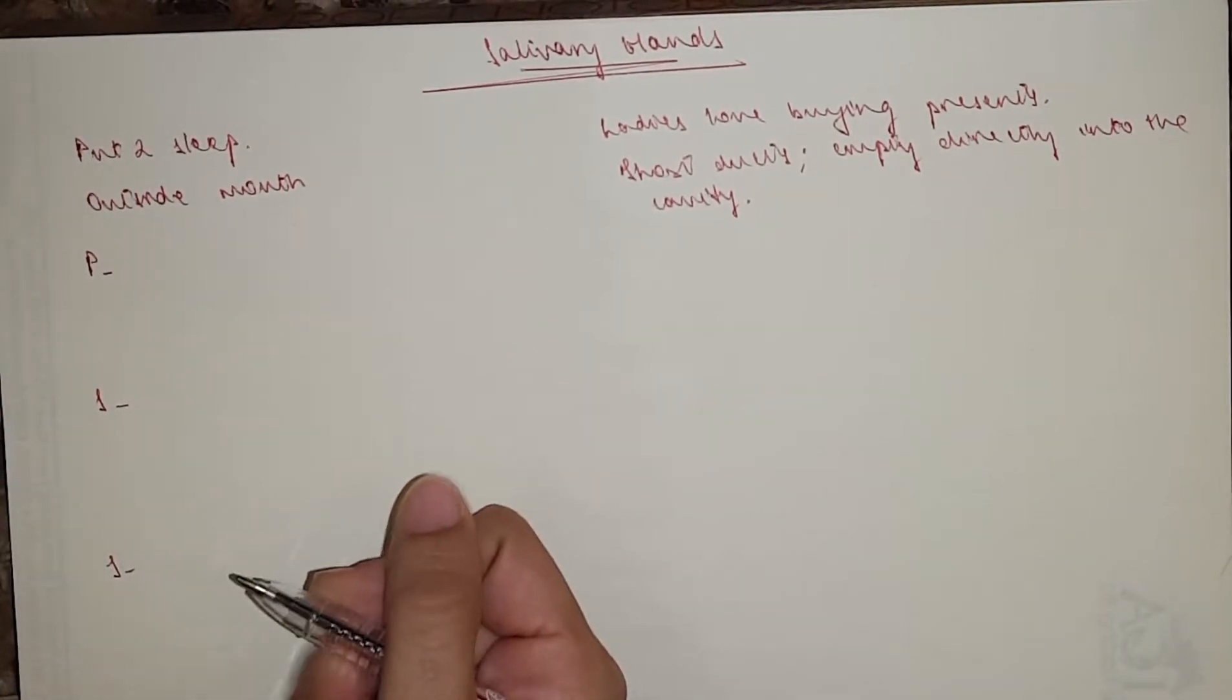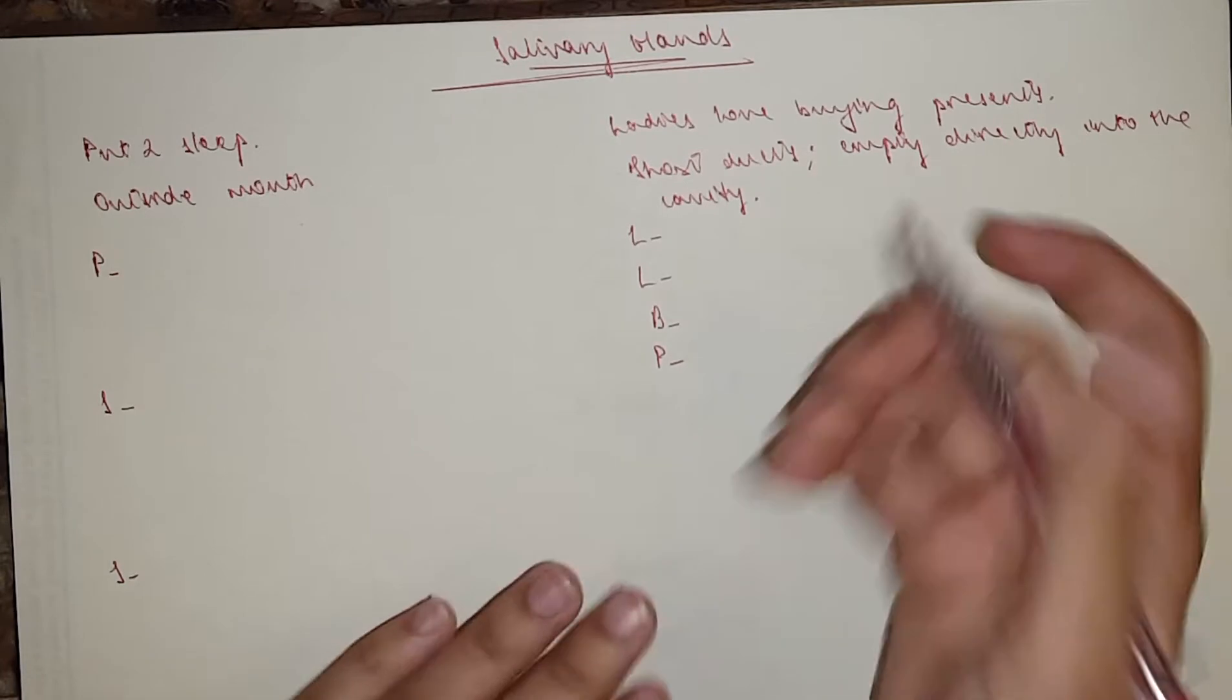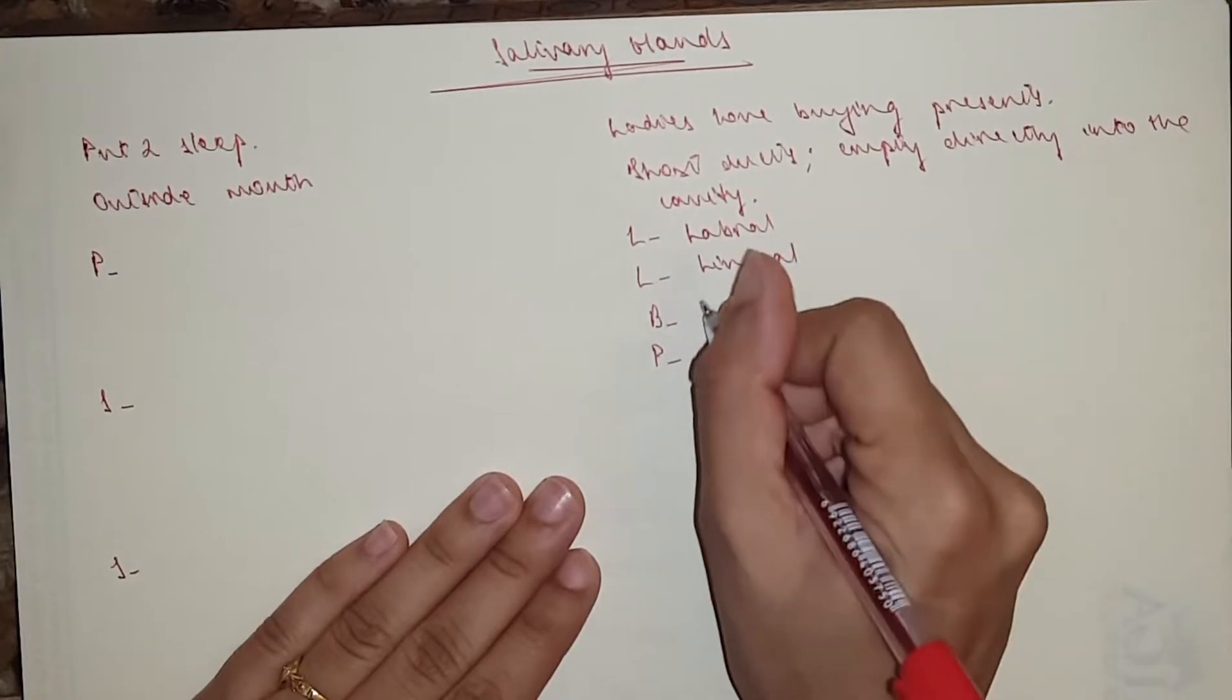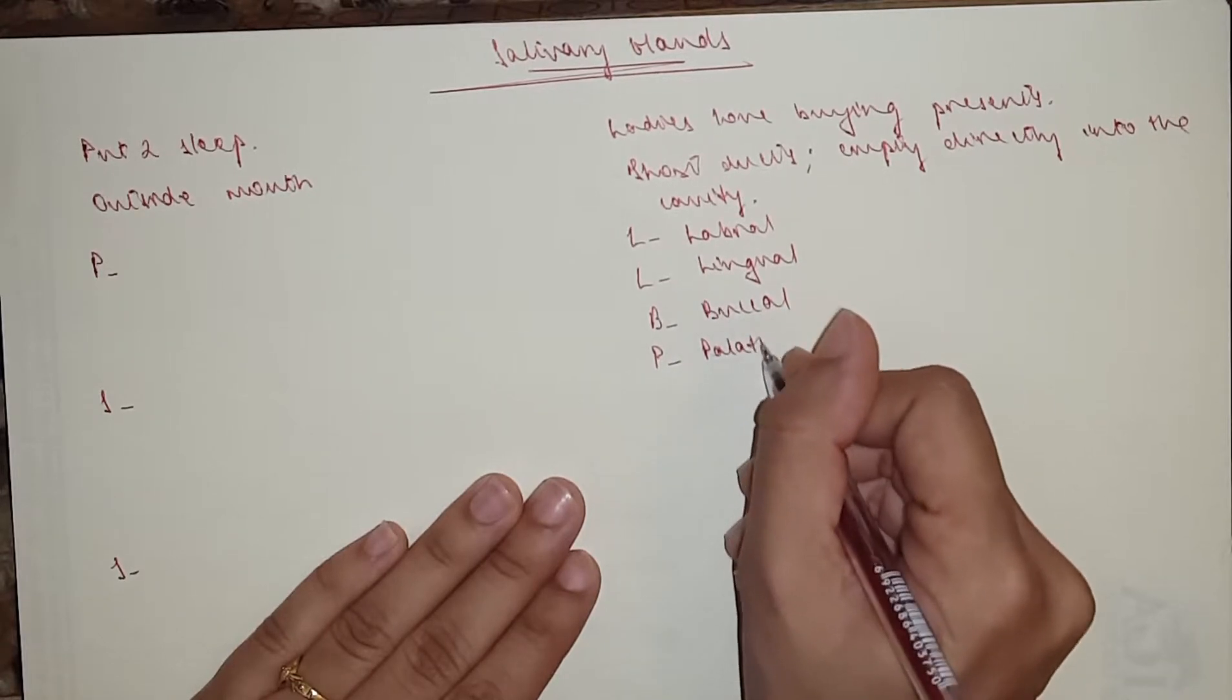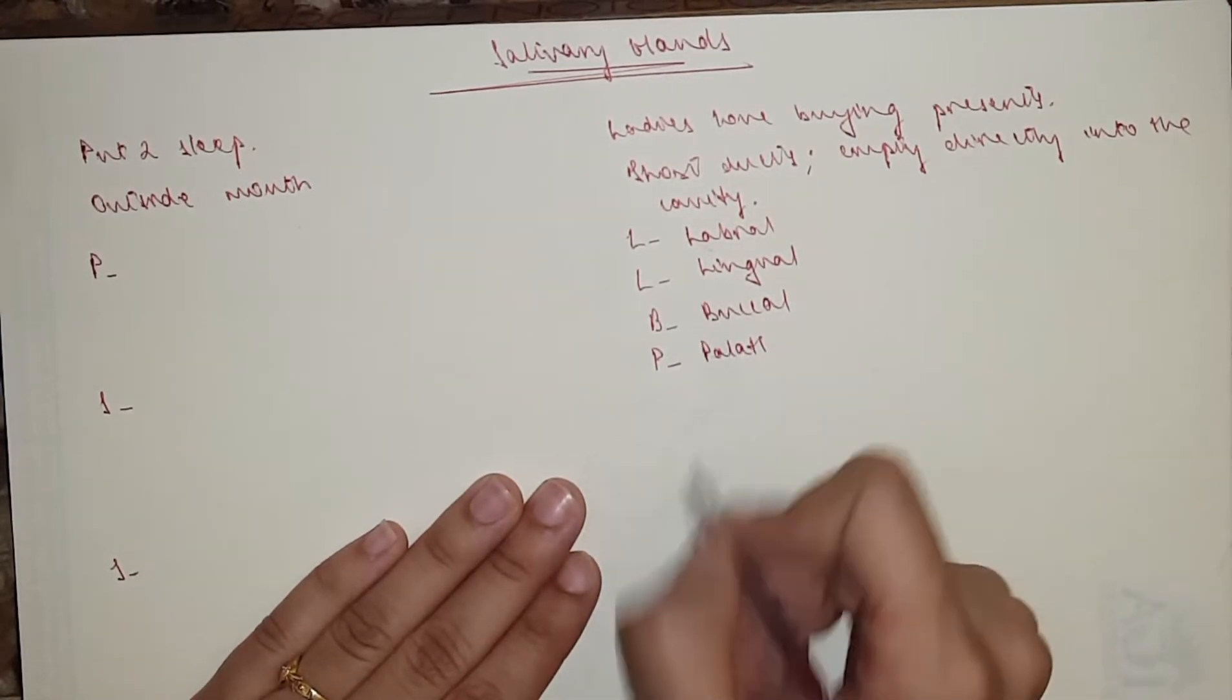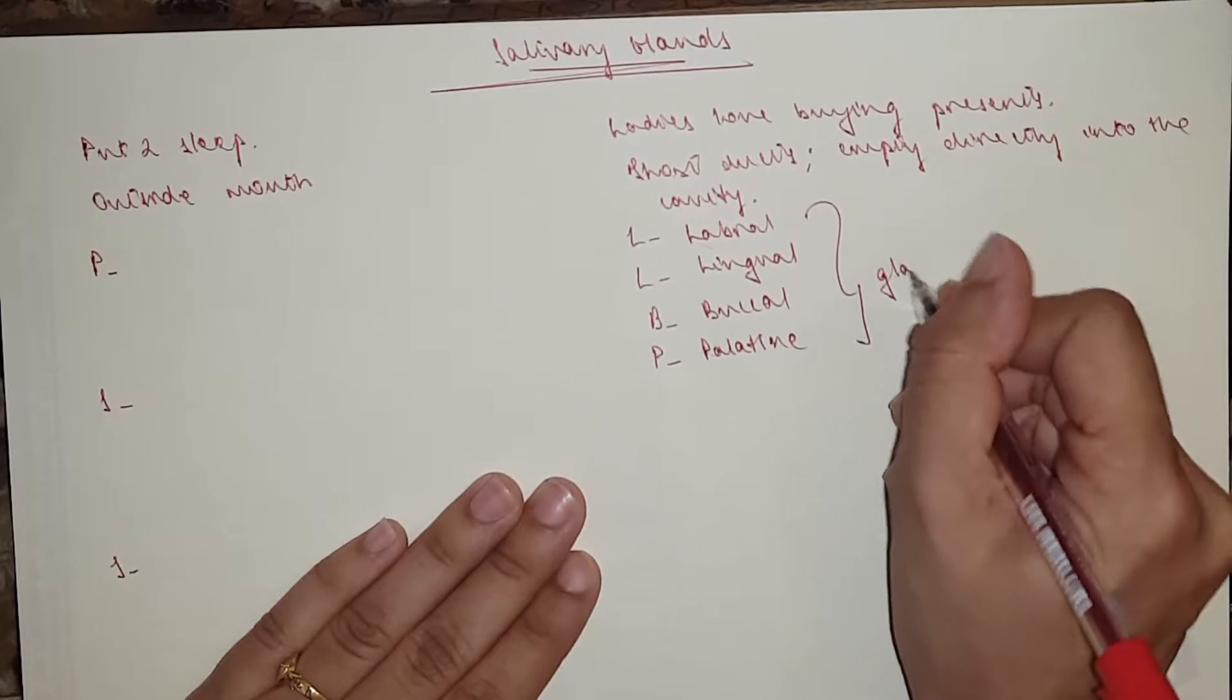Now LLBP would be labial glands, lingual, buccal, and palatine. So it's just different parts inside the mouth: you've got the lips, you've got the tongue, the buccal which are kind of like cheeks, and you've got the palatine, just like the roof of the mouth. All of them are the names of the glands.